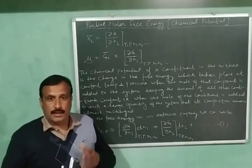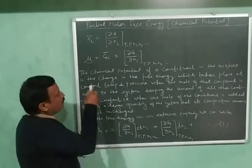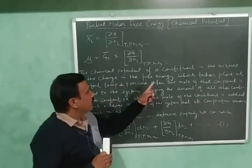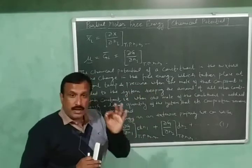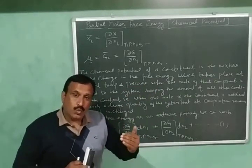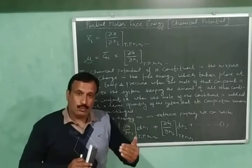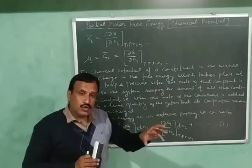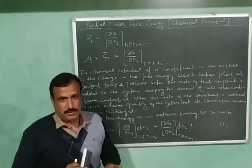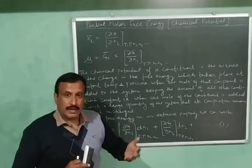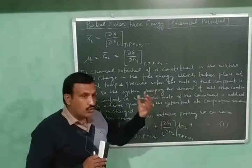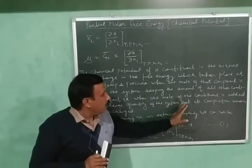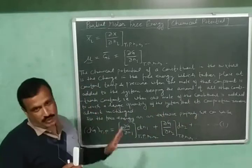The Chemical Potential of a constituent in a mixture is defined as the change in free energy that takes place at constant temperature and pressure when one mole of that component is added to the system, keeping the amount of all other constituents constant. Equivalently, one mole of the constituent is added to such a large quantity of the system that its composition remains almost unchanged.